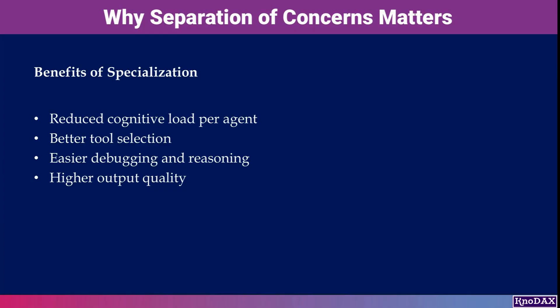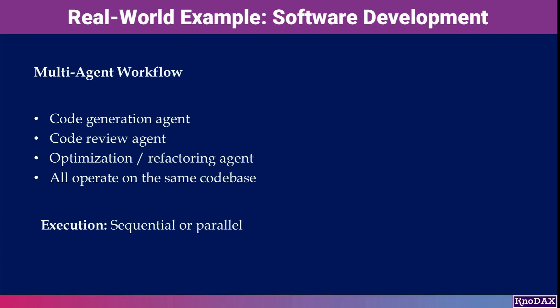The result is cleaner reasoning, better tool usage, and higher quality outputs. A great real-world example is software development — you might have one agent generating code, another reviewing it, and another optimizing or refactoring it.